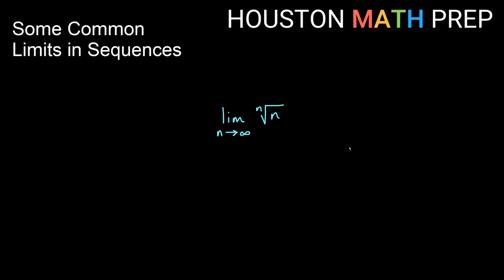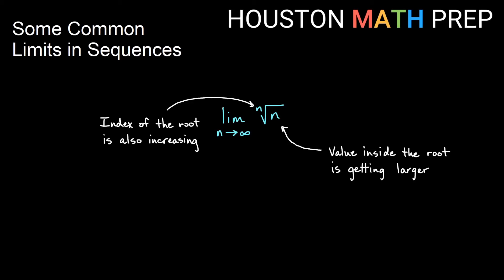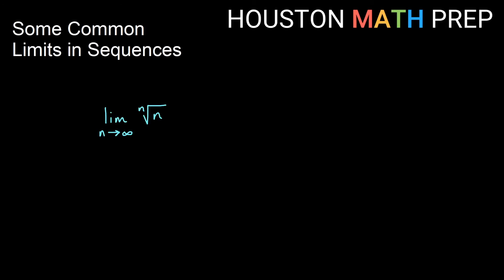One common one is the limit of the nth root of n. As n gets really large, the value inside is getting big but the type of root we're taking is also getting bigger. We can write this as the limit of n to the 1 over n, and this is a form of infinity to the 0 as n gets really large.